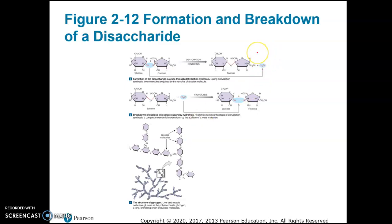In dehydration synthesis, sucrose is formed from glucose and fructose as reactants. A water molecule is removed by taking an OH from glucose and an H from fructose — that's the dehydration part — and sucrose plus water are the products. The reverse, hydrolysis, is when sucrose is broken down by the addition of water. 'Hydro' refers to water addition and 'lysis' to breakdown, yielding glucose and fructose as the simpler sugar products.